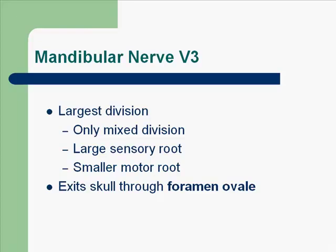The mandibular nerve V3 is the largest division and the only mixed division. It has two roots: a large sensory root and a smaller motor root. This nerve exits the skull through the foramen ovale. Both motor and sensory roots leave the skull through this foramen, but do not unite as one nerve trunk until they are outside the skull.